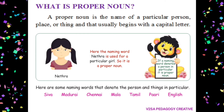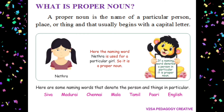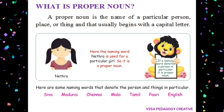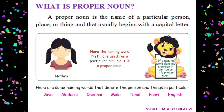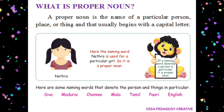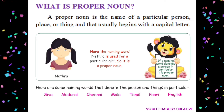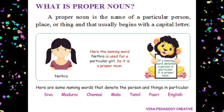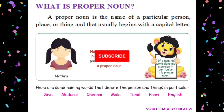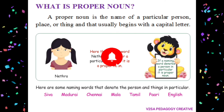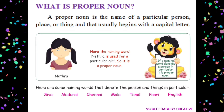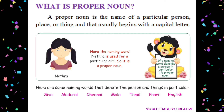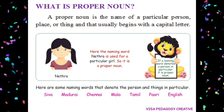Here are some naming words that denote persons and things in particular. For examples: Shiva, Madurai, Chennai, Mala, Tamil, Pari, English. Madurai and Chennai are place names. Tamil and English are languages. Pari and Shiva are person names. These are proper nouns.